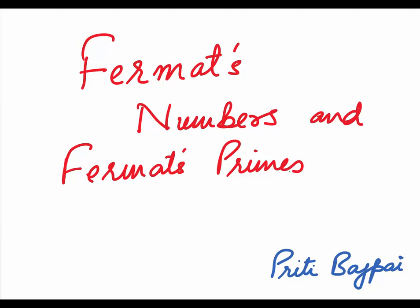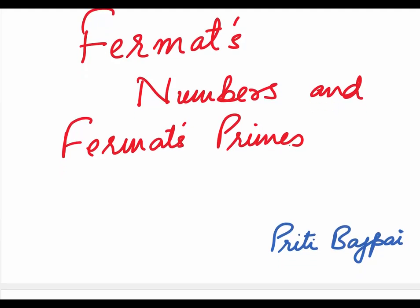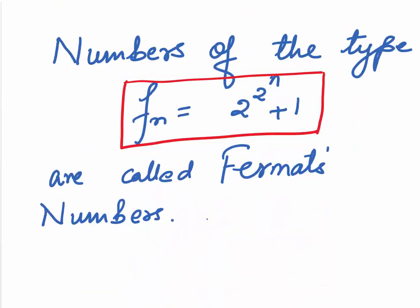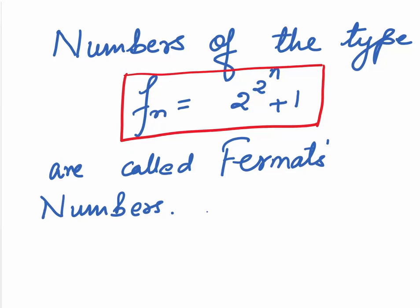Fermat, who was a French lawyer and mathematician, thought he had a formula for finding all the primes. His formula, Fn is 2 to the power 2 to the power n plus 1. But that was not true.